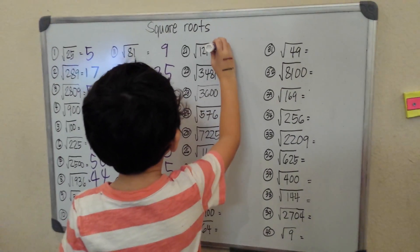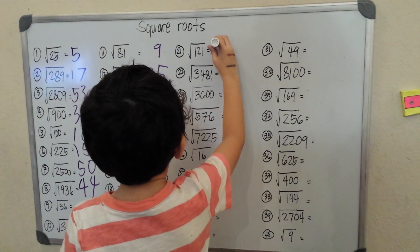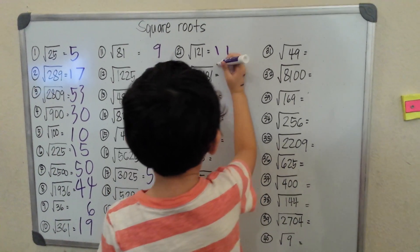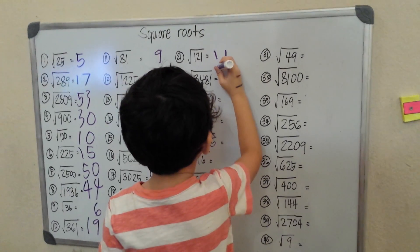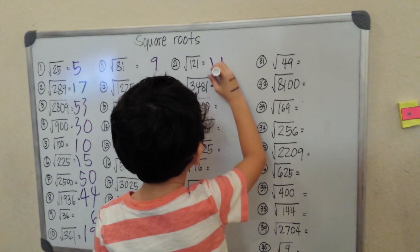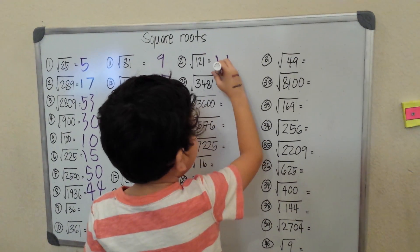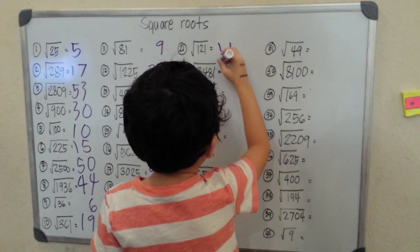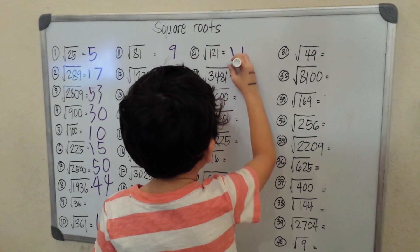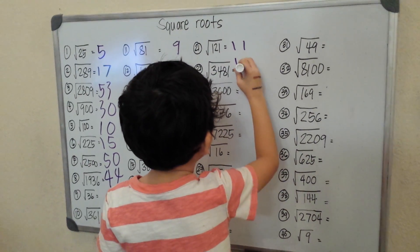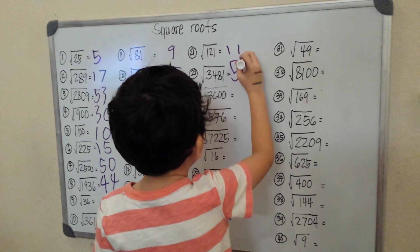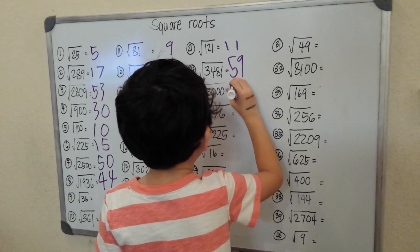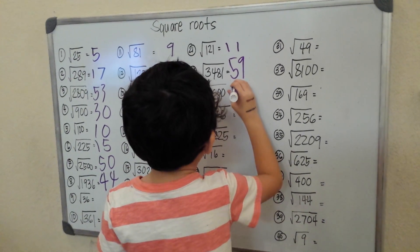Square root of 121 is 11. Square root of 3481 — I think it's 59. Square root of 3600.